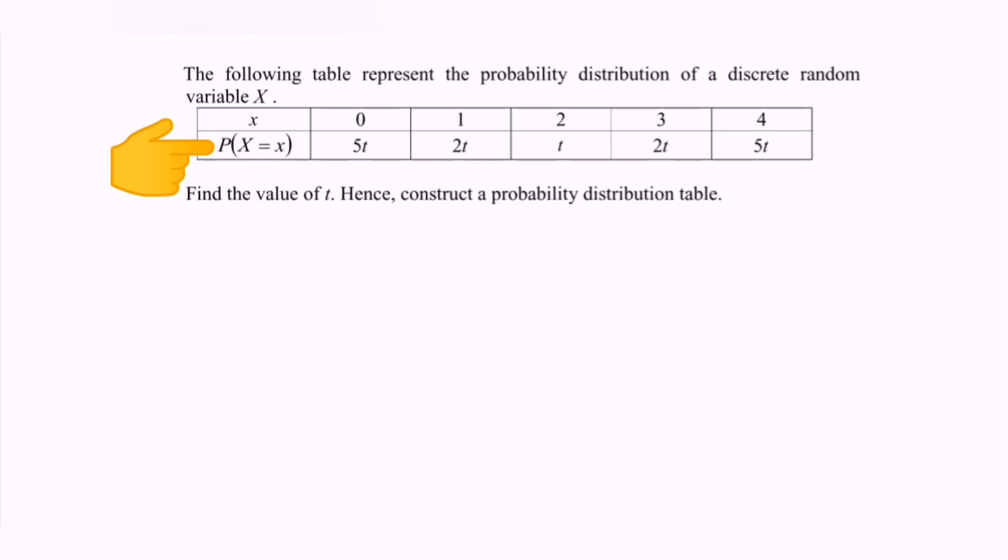And the probability for the discrete random variable would be 5t, 2t, t, 2t, and 5t, respectively. The question asks: find the value of t, hence construct a probability distribution table.